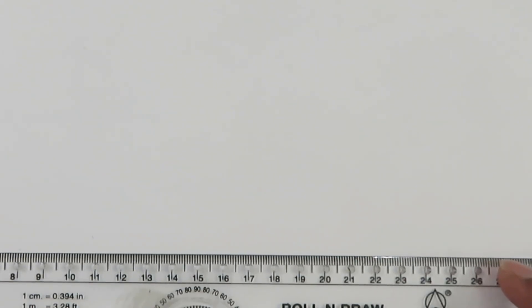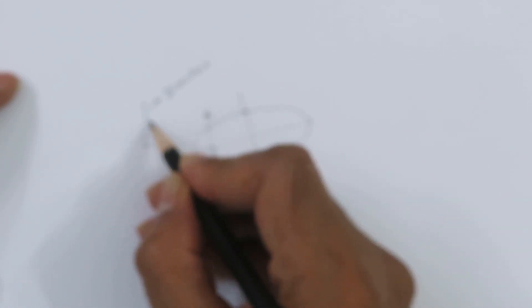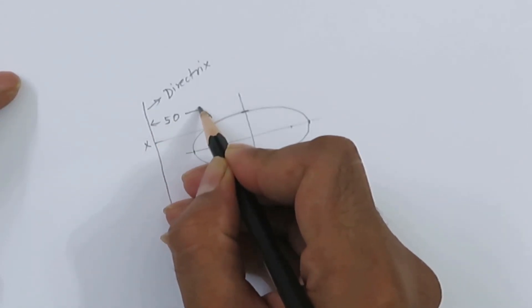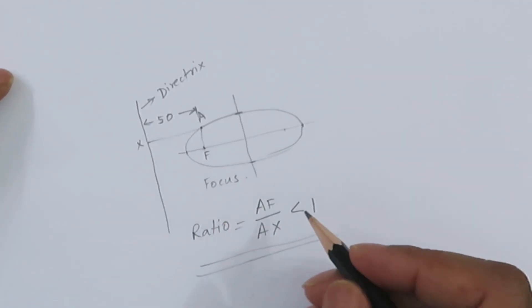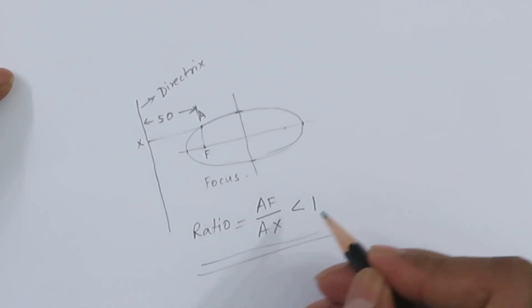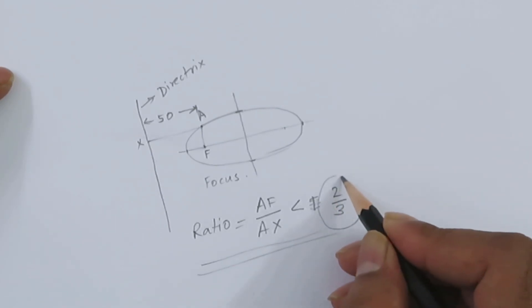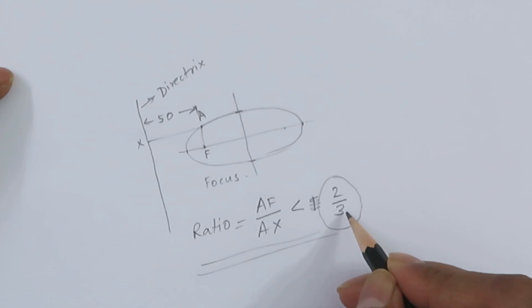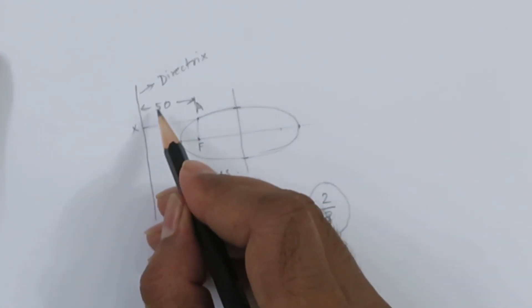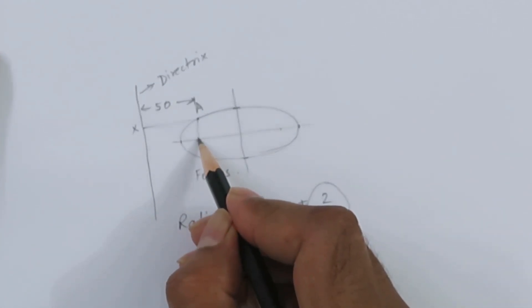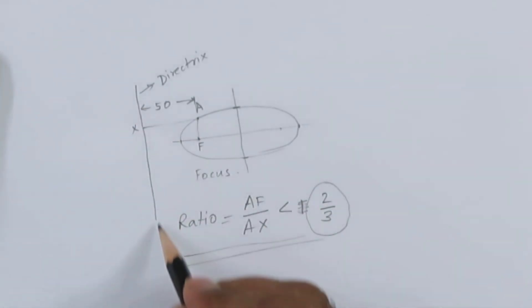Here we will draw an ellipse. The focus is 50 millimeter from directrix and this ratio F over AX is actually 2 by 3. We will use this ratio, this is less than 1. We will use this ratio of 2 by 3 and keep the focus of this ellipse 50 millimeter from the directrix.